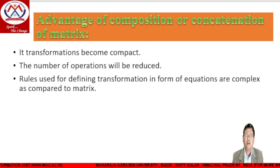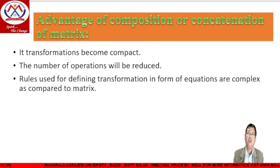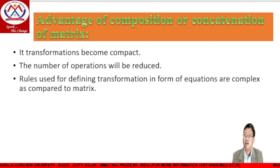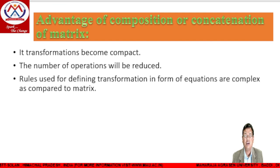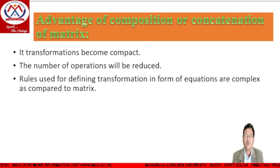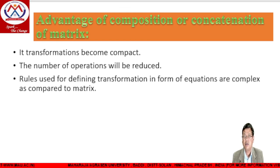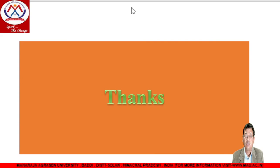The advantage of composite transformation is that if we concatenate two matrices, the transformation becomes compact and the number of operations is reduced. In a single step, we can compute the resultant coordinates. We can use these rules to define complex transformations as equations, and solve very complex matrices by multiplying and making the composition of these matrices. Thank you very much.